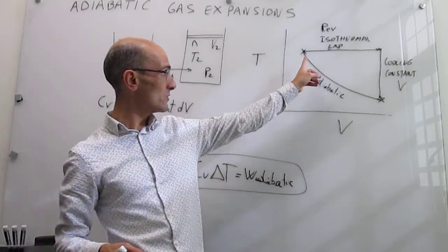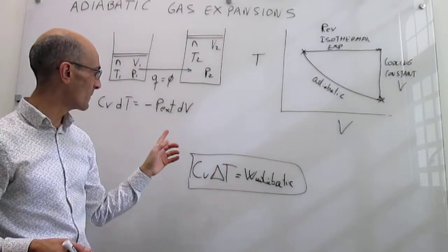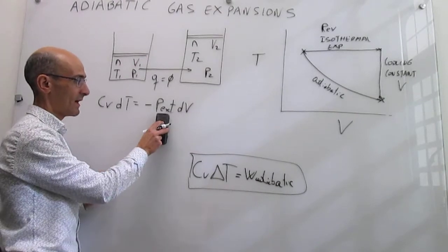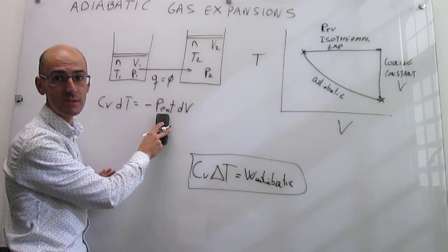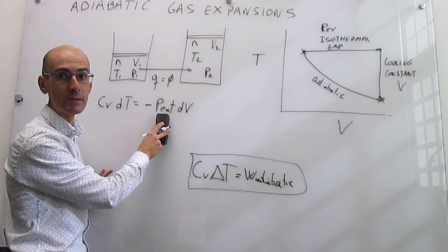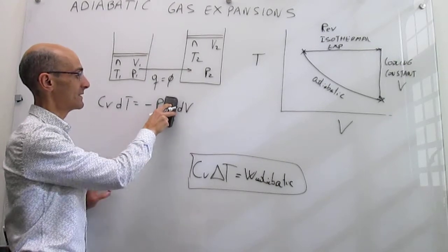So if that expansion, which is isothermal, is reversible, then we can actually conveniently replace that external pressure by the pressure of the gas, because in reversible isothermal expansions, there's always mechanical equilibrium between the system and the surroundings.